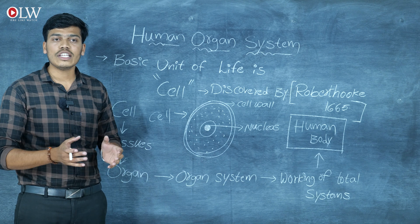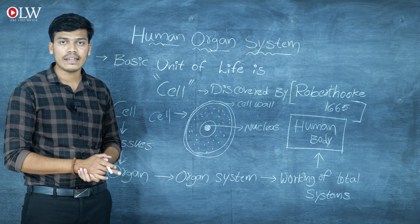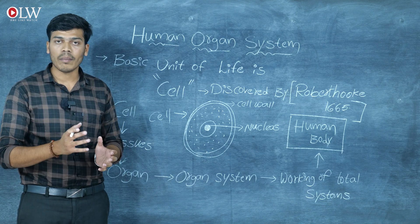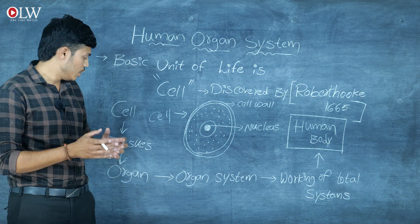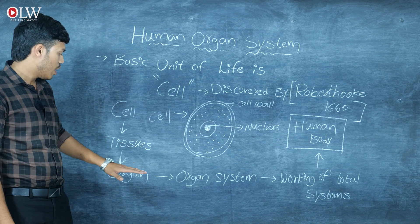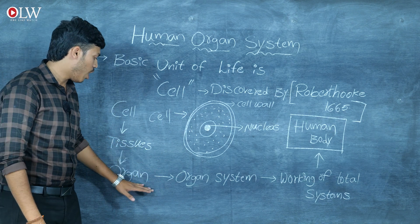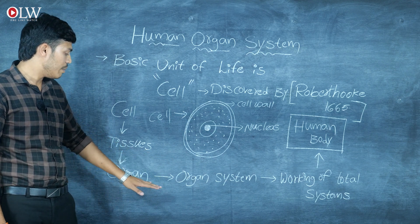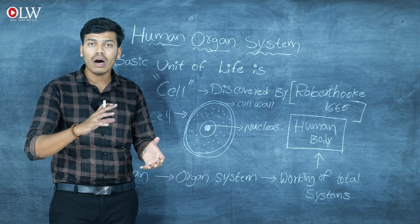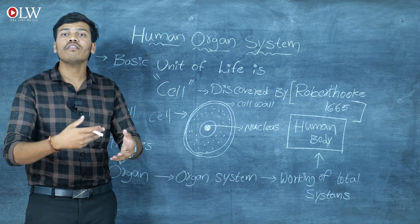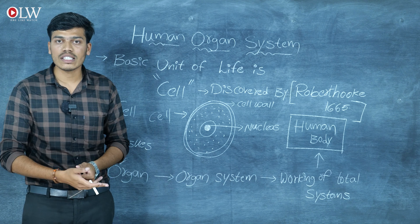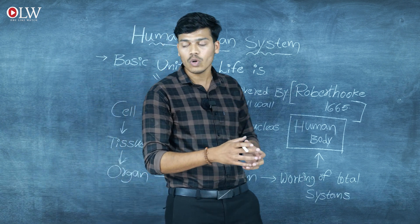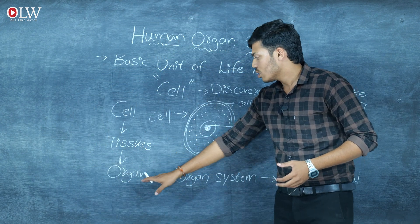Tissue is the living material which is formed when a group of cells combine together to form tissues. These tissues are combined together to form organs. So what does organ mean? All the cells are combined together to give one product — that living thing is called a tissue, and the tissues combine together to form organs.